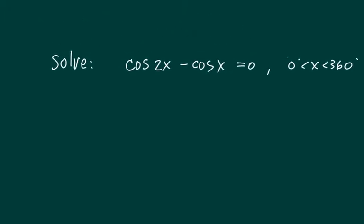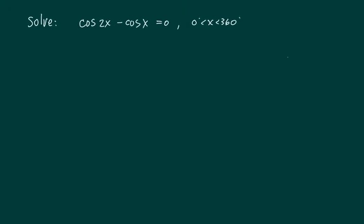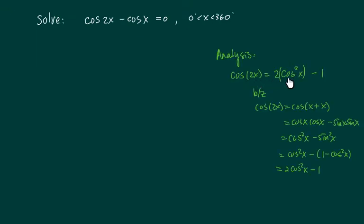Here we have a tricky equation to solve. It involves cosine 2x and cosine x. The analysis part is we want to convert the cosine 2x in terms of cosine x, so we have a quadratic equation to solve down the road.